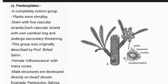The female inflorescence has many cones. Gymnosperms do not produce flowers but only cones. The male structures are developed directly on dwarf shoots. Examples for Pentoxylales are Pentoxylon and Sahnia.